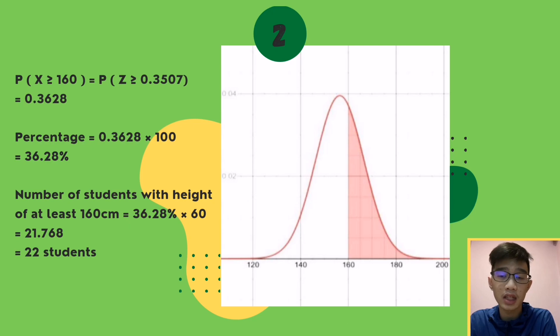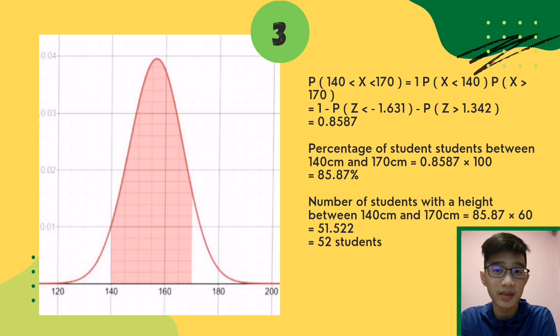If you remember the data, there are actually 22 students within this range. Next, range between 140 to 170 cm. To calculate the standard normal distribution, we minus 1 with the area under the graph less than 140 at the left and area more than 170 at the right. The total area of standard normal distribution graph is 1 unit squared, and we get 0.8587. This means 85.87% of students are within this range, which equals 52 students.